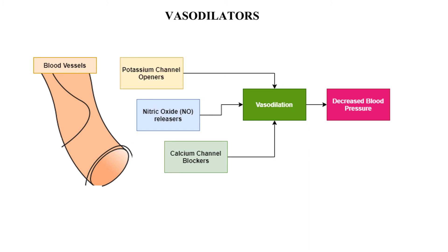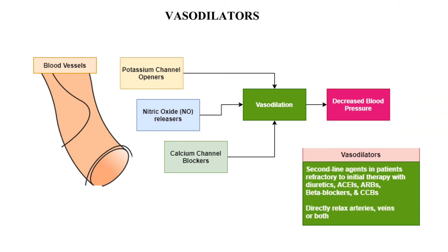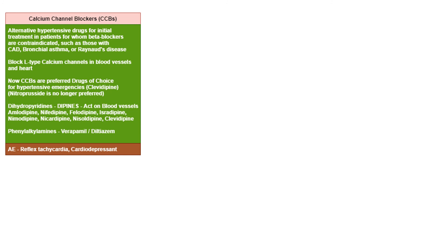Vasodilators act directly on blood vessels and are of three kinds: potassium channel openers, nitric oxide releasers, and calcium channel blockers. All lead to vasodilation and decreased blood pressure. Vasodilators are second-line drugs in patients refractory to initial therapy with diuretics, ACE inhibitors, ARBs, beta blockers, or calcium channel blockers. Calcium channel blockers are alternatives to beta blockers and are contraindicated in patients with coronary artery disease, bronchial asthma, or Raynaud's disease. They block L-type calcium channels in blood vessels and the heart and are now preferred for hypertensive emergencies — for example, clevidipine.